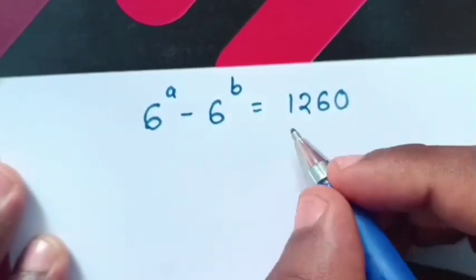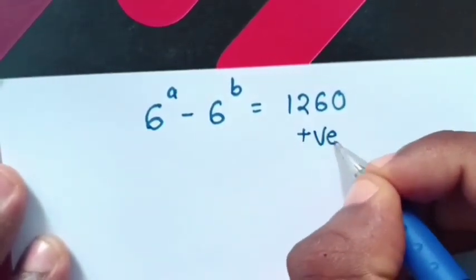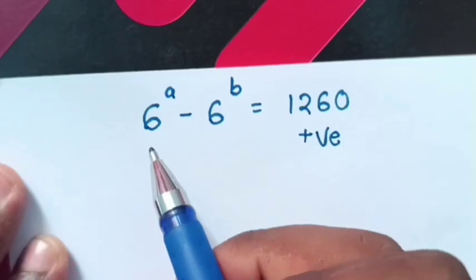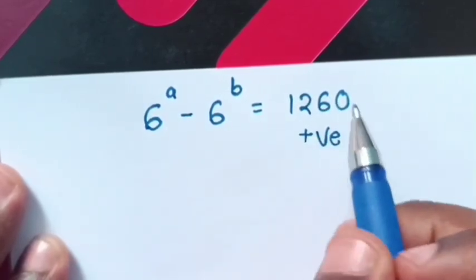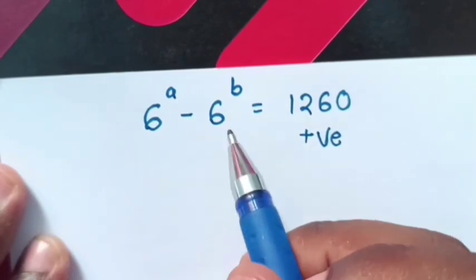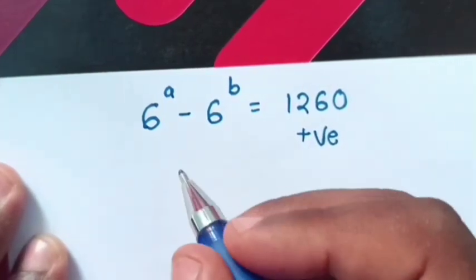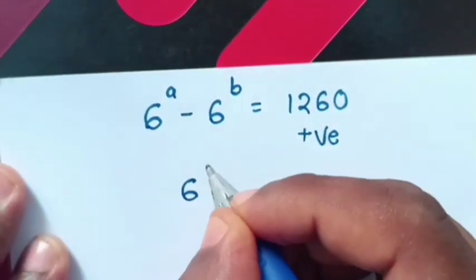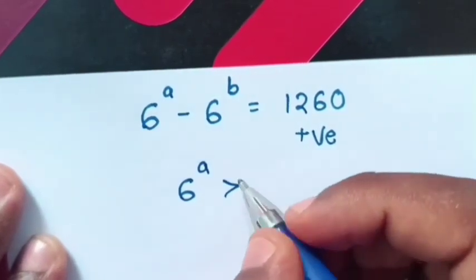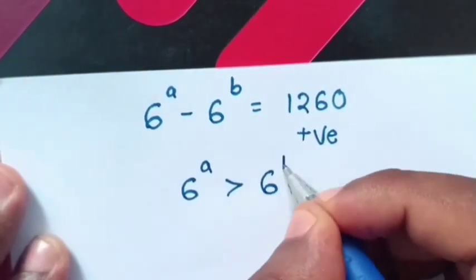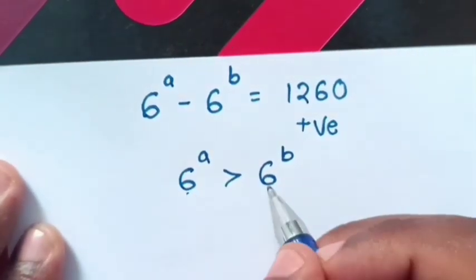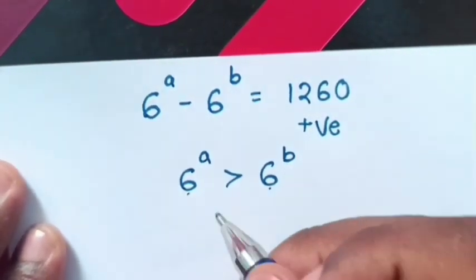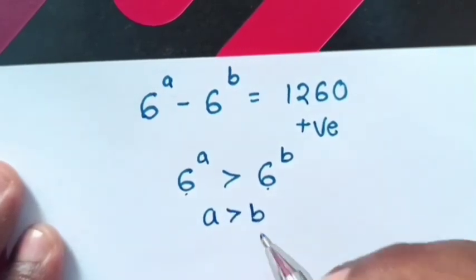Now, if 1260 is positive, it means 6 power a is greater than 6 power b to get the positive value. Therefore, it can be written as 6 power a is greater than 6 power b. Then, because they have same base, we compare the powers. So, a is greater than b.